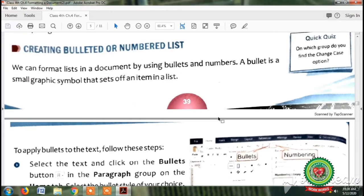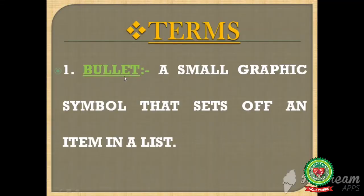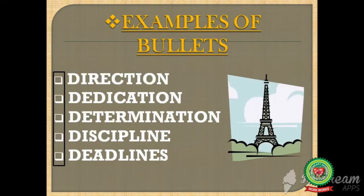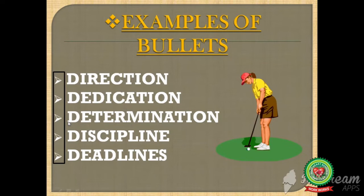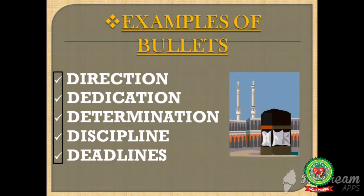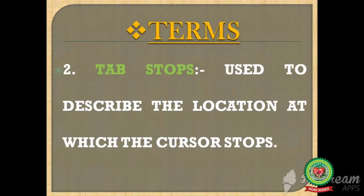Before starting our topic, we will discuss the terms. Our first term is bullet — a small graphic symbol that sets off an item in a list. 'Graphic' means a symbol which has images. Here are some examples of bullets, highlighted by a rectangle. Bullets make the appearance of a document more attractive and beautiful. The second term is tab stop, used to describe the location at which the cursor stops.